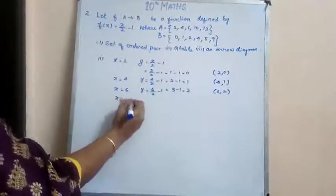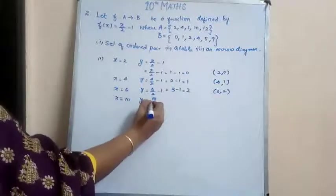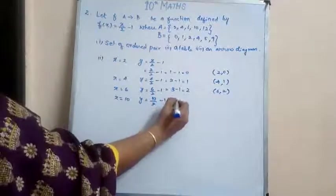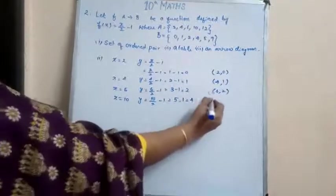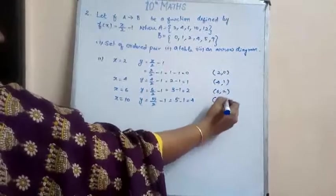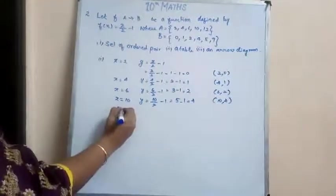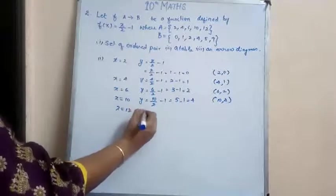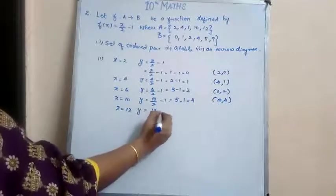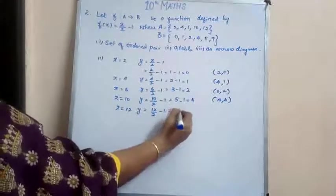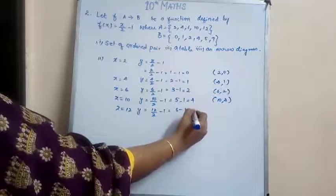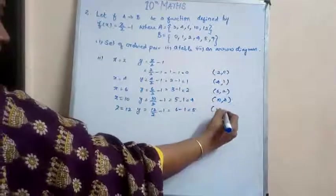x = 10, y = 10/2 - 1, so 5 - 1, which is equal to 4. So (10, 4). So x = 12, y = 12/2 - 1, so which is 6 - 1, so 5. So (12, 5).